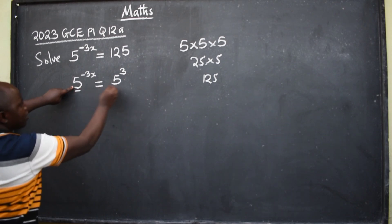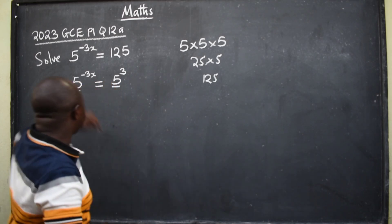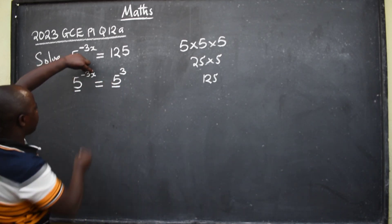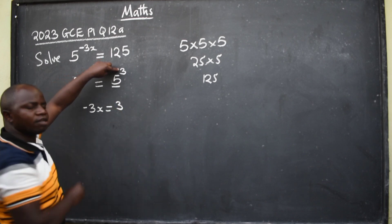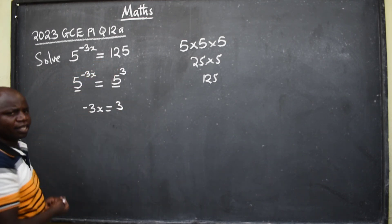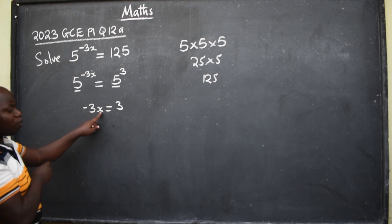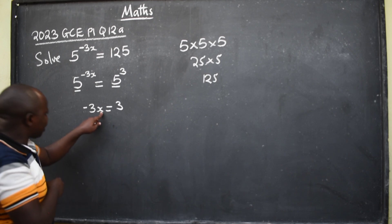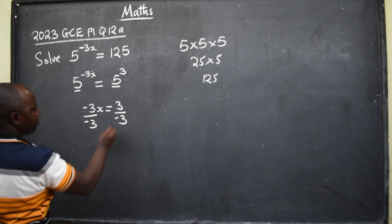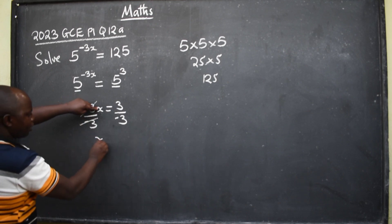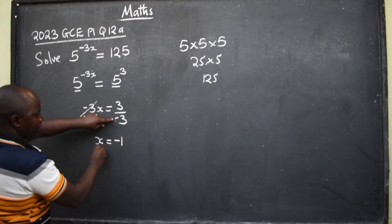Now that the bases are the same, get the powers and equate them. The power on the left side is negative 3x, equals the power on the right which is 3. Divide both sides by negative 3 — don't leave out the negative, because we want to isolate x. So divide by negative 3 on both sides and cancel them. 3 divided by negative 3 gives negative 1. So x equals negative 1.